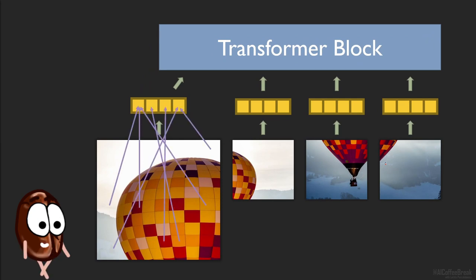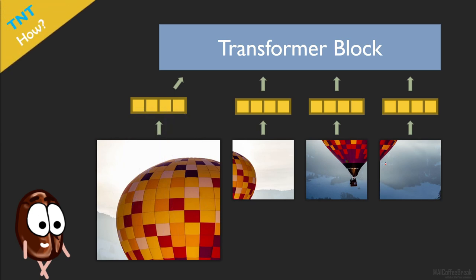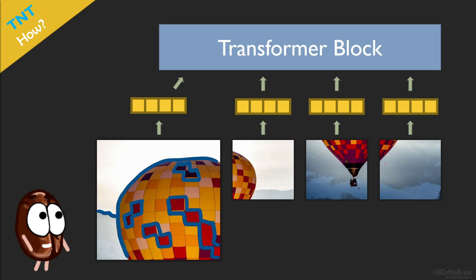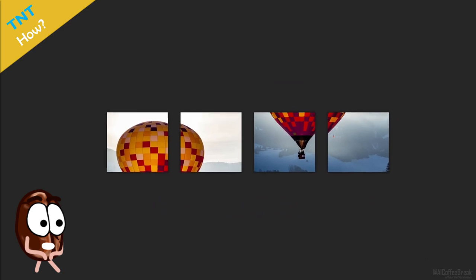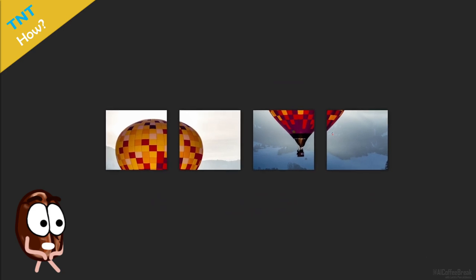So it is time for the transformer in transformer, or short TNT, to come in and model both local and global information. The authors of TNT also split the image into a sequence of patches. These patches are p by p pixels, where p is set to 16, for example. So until here, everything is like we are used to from VIT or DEIT.